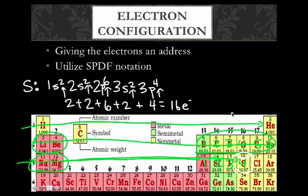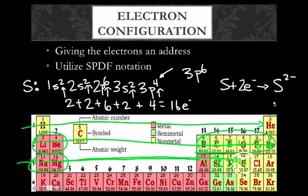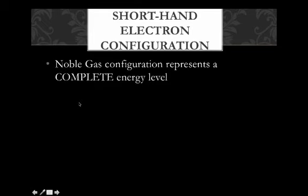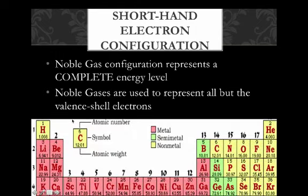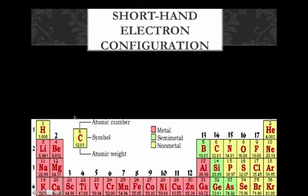So we've given every electron an address. We can also describe how sulfur is going to react. If this is going to be all the way full, then we should have a 3P6, and sulfur has a 3P4. So we know sulfur is going to react in such a way that it adds 2 electrons to its outer shell. When it does, it's going to obtain a 2 minus charge because electrons are negative. If we put 2 more in there, it's going to have a negative charge overall. So the shortcut, which is really handy, basically we're going to use noble gas configuration to represent a complete energy level.